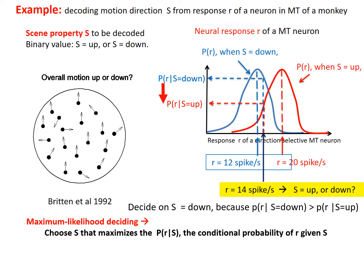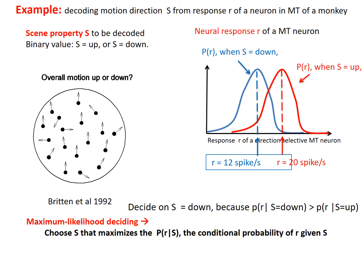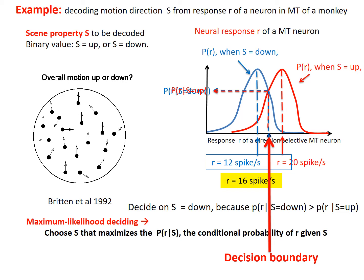Maximum likelihood decoding is to choose the decoded solution S that maximizes the likelihood that the observed neural response is R. At response level R — say 16 spikes per second — it is equally likely that this response is caused by a downward or upward motion direction. If the neural response is larger than this level, the maximum likelihood decoding outcome is outward motion direction. This is the optimal decision boundary: the decoded solution will be upward or downward depending on whether the observed neural response is larger or smaller than this boundary level.